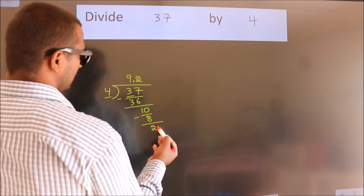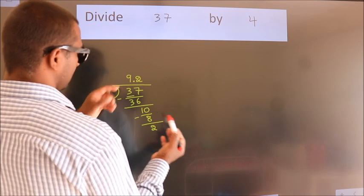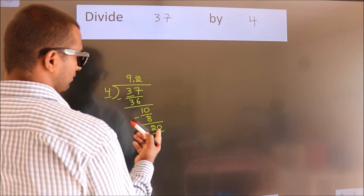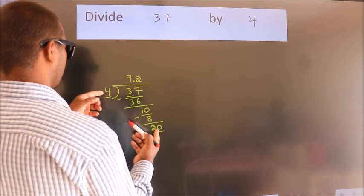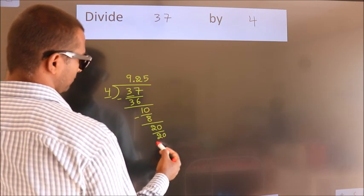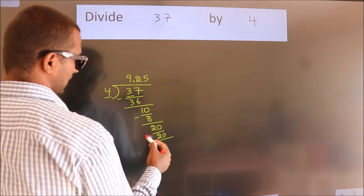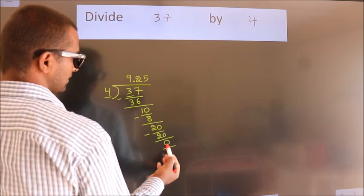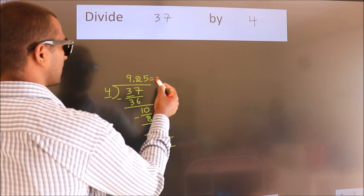After this, we already have the decimal, so directly take 0. So 20. When do we get 20 in the 4 table? 4 fives, 20. Now we subtract, we get 0. We got remainder 0. So this is our quotient.